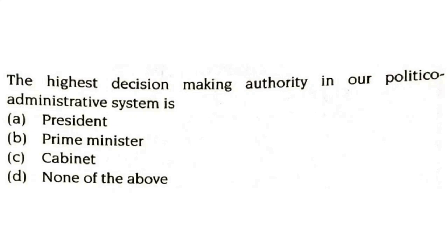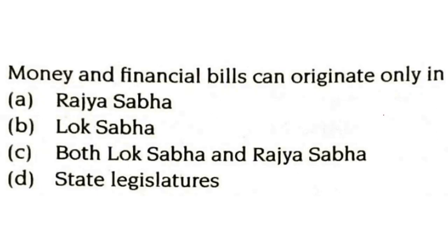It is talking about the highest decision-making authority in the political administrative system. The answer should be the cabinet. The next question: money and financial bills can originate only in Rajya Sabha, Lok Sabha, both Lok Sabha and Rajya Sabha, or the state legislatures? The money and financial bills can only be originated in Lok Sabha.